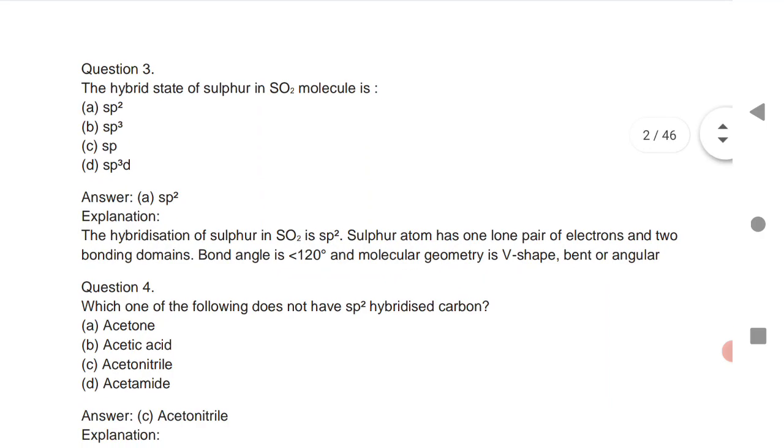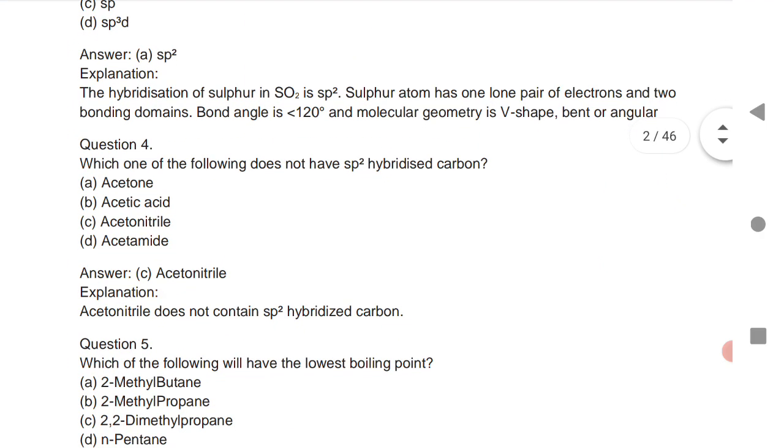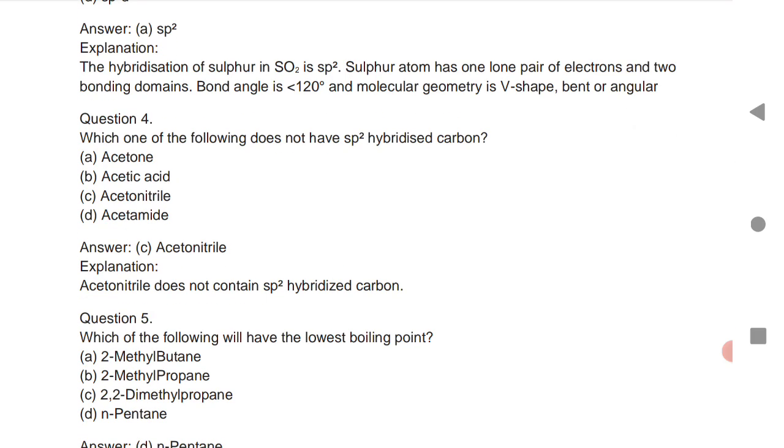Which of the following doesn't have sp2 hybridized carbon? Acetone has sp2 hybridized carbon, acetic acid also, acetamide also. Acetonitrile doesn't have sp2 hybridized carbon. You know what sp2 means: double bond in a molecule. If there is a double bond it's sp2 hybridized; if all are single bonds, that is sp3; if there is one triple bond, that is sp hybridized.